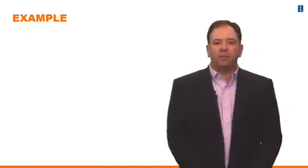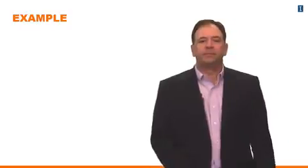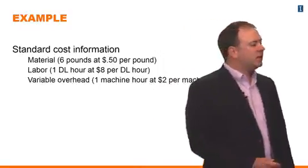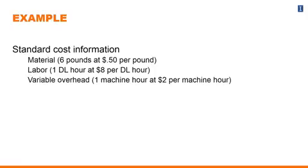Let's introduce an example scenario. Suppose that a company for a given month has the following standard cost information. They have three categories of variable costs: materials, labor, and variable overhead. For materials, let's suppose they have a single input — each unit produced is supposed to use 6 pounds, and the standard price is approximately 50 cents per pound.